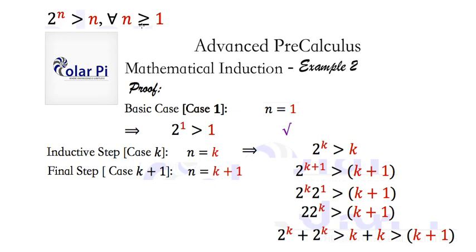But then, since we're talking about k values that are at minimum 1, we know that k plus k is greater than k plus 1. So by transitivity, we see that 2 to the k plus 2 to the k is greater than k plus 1. That is, we proved that 2 to the k plus 1 is greater than k plus 1. Cool.